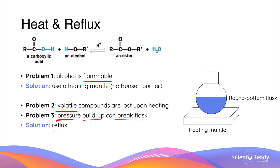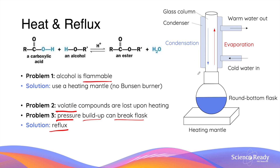The solution to these problems is using reflux. Reflux refers to connecting a long glass column to the opening of the flask, which allows volatile substances to ascend without building up pressure in the flask. To prevent the volatile substances from leaving the reaction vessel, a condenser is set up around the column such that when cold water flows through the condenser, it absorbs heat from the volatile substances in the column, causing them to condense and descend back down the column due to gravity. The cold water usually enters the condenser at the bottom and exits as warm water at the top, so that flow against gravity prolongs the time during which cold water can absorb the heat and increases the effectiveness of the condenser.